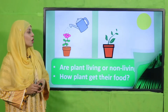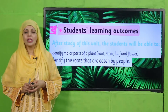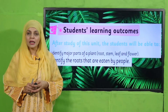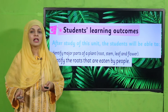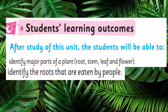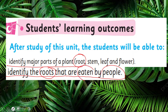Now let's quickly look at the student learning outcome for today. By the end of today's lecture, students will be able to identify major parts of the plant — root — and identify the roots that are eaten by people, yani ki jo roots hum khate hain.